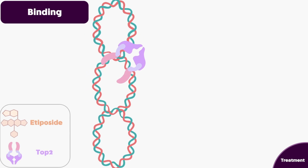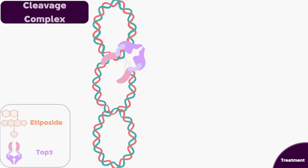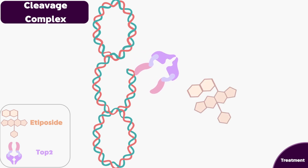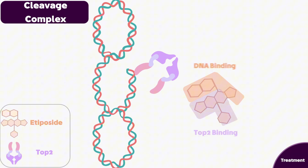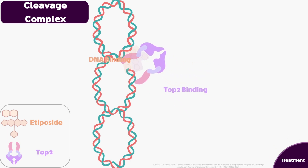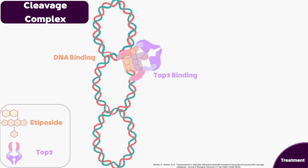For drugs that inhibit the topo 2 enzyme, there is a drug named etoposide. After the cleavage step — specifically during the cleavage complex step — etoposide interferes and joins the cleavage complex, having one part that binds DNA and another that binds topo 2. Together, these two parts lock the cleavage complex in place, subsequently leading to DNA damage and finally apoptosis.